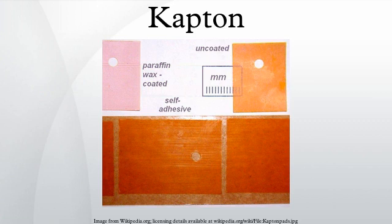Kapton is also commonly used as a material for windows of all kinds at X-ray sources and X-ray detectors. Its high mechanical and thermal stability and high transmittance to X-rays make it the preferred material. It is also relatively insensitive to radiation damage.